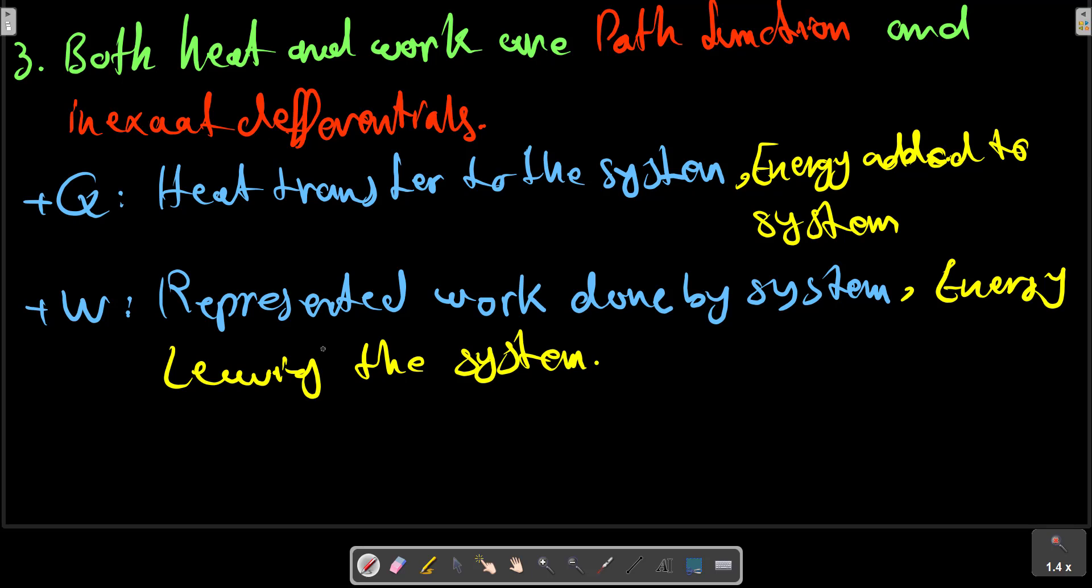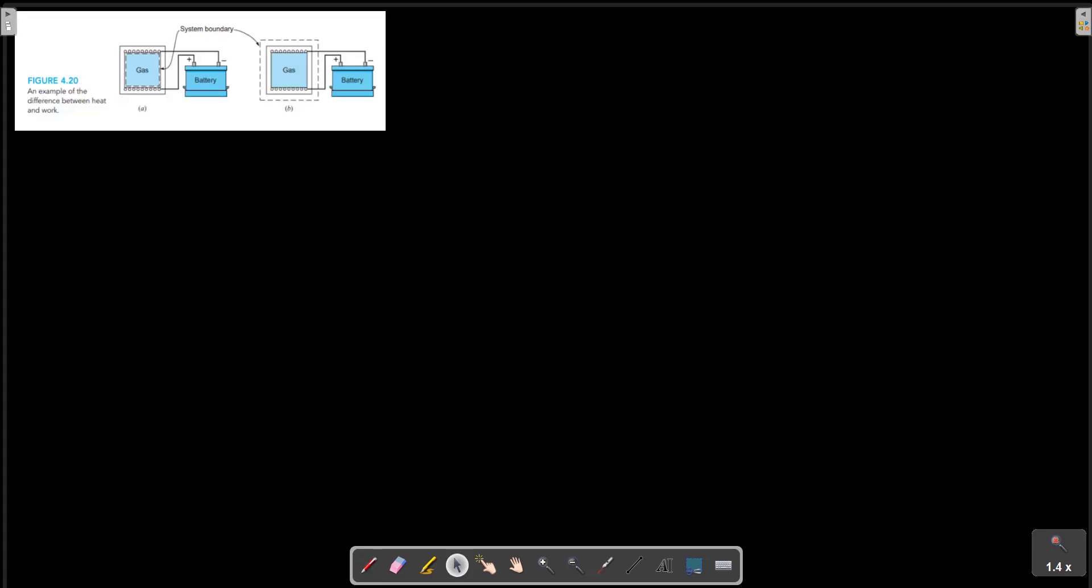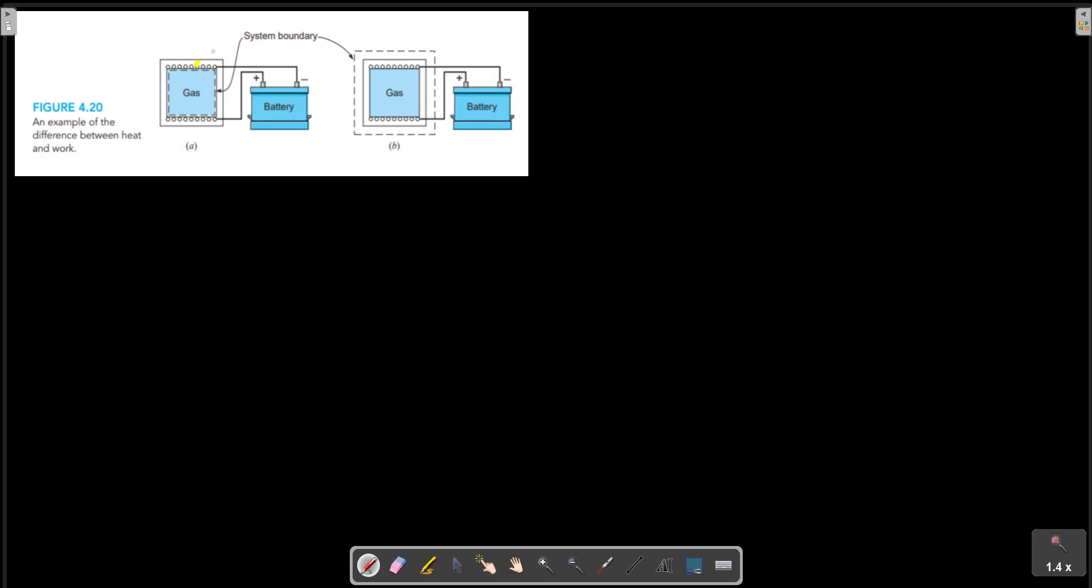Another illustration may help explain the difference between heat and work. Consider a container in a rigid vessel. Resistance coils are bounded around the outside of the boundary. When current flows through the resistance coils, the temperature of the gas increases. In this case, heat transfer crosses the boundaries.